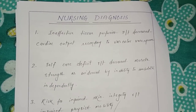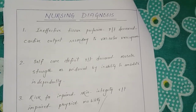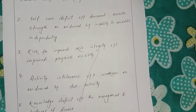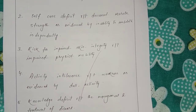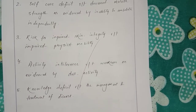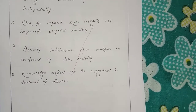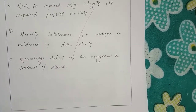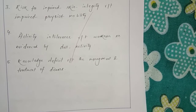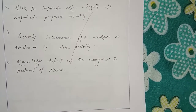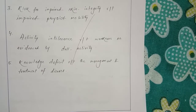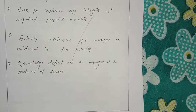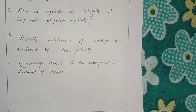Then here are the nursing diagnoses. First: ineffective tissue perfusion related to decreased cardiac output secondary to vasospasm. Second: self-care deficit related to decreased muscle strength, as evidenced by inability to ambulate independently. Third: risk for impaired skin integrity related to impaired physical activity. Fourth: activity intolerance related to weakness as evidenced by limited daily activity. Fifth: knowledge deficit related to the management and treatment of the disease.